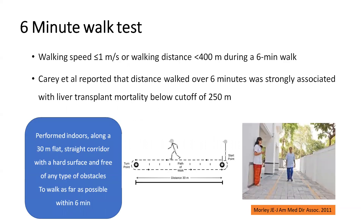The third important test is the six-minute walk test. The patient walks continuously for six minutes on a plain level ground without obstacles, and we calculate the distance covered. If less than 400 meters, the patient's muscle performance is poor and requires further assessment and intervention. A study has shown that those with a six-minute walk distance less than 250 meters have higher mortality and morbidity. These three tests are very cheap, require no extra equipment, can be practiced routinely, and allow dynamic monitoring of patient progress after dietary and exercise interventions.